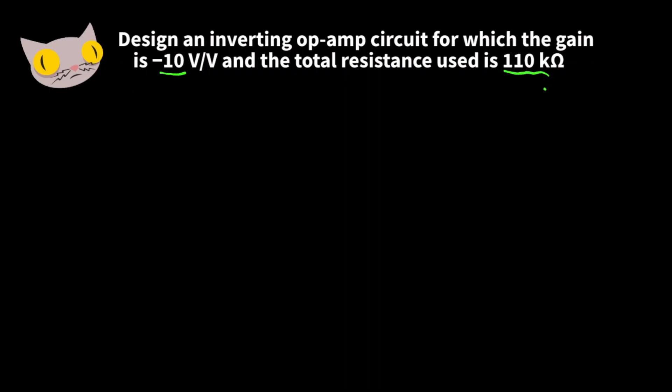The voltage gain of an inverting op-amp is G equals negative R2 over R1, where G is our gain.